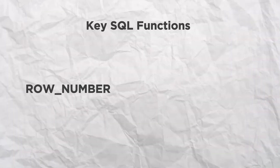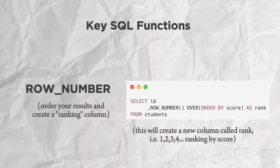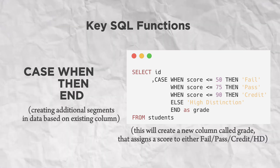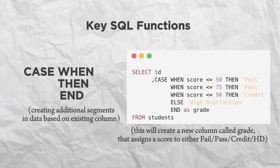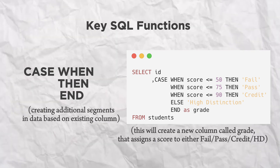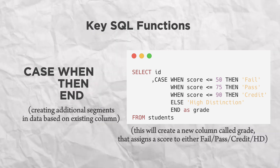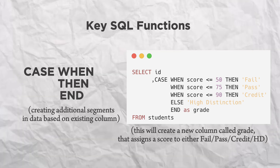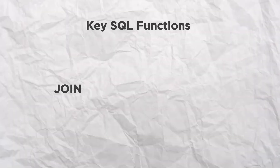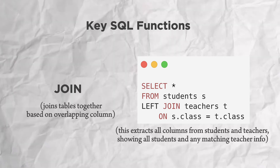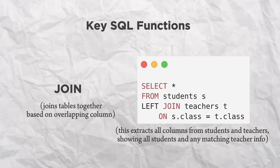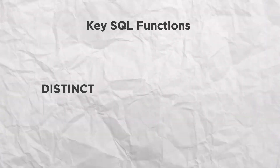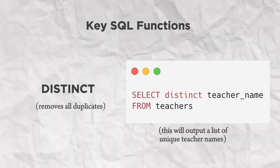Now let's move into some more SQL functions. Firstly, we've got ROW_NUMBER, which is very useful when you want to order your results and add a ranking. Next, we have the CASE WHEN statement — I use this all the time to create segments in my data. For example, if my score is between 90 to 100, then I want to make a new column for grade called 'high distinction.' Next, we have JOIN, which combines rows from two tables based on an overlapping column. The most common joins I use are INNER JOINs and LEFT JOINs. The keyword DISTINCT removes duplicate values in the result set.